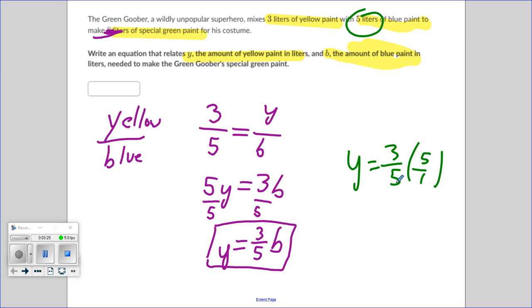Well, when I replace B by five, what do I get? I get Y equals three. Three.